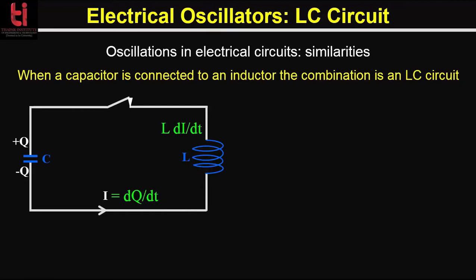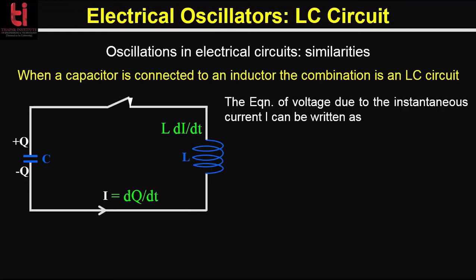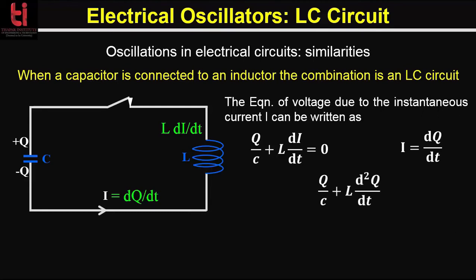Now using Kirchhoff's law we can analyze this LC circuit. According to Kirchhoff's law the sum of the voltages around the circuit is equal to zero. So the voltage across the capacitor plus the voltage across the inductor equals zero. The equation can be written as Q/C + L·dI/dt = 0. Since I = dQ/dt, we can write Q/C + L·d²Q/dt² = 0, which gives d²Q/dt² = −(1/LC)·Q.